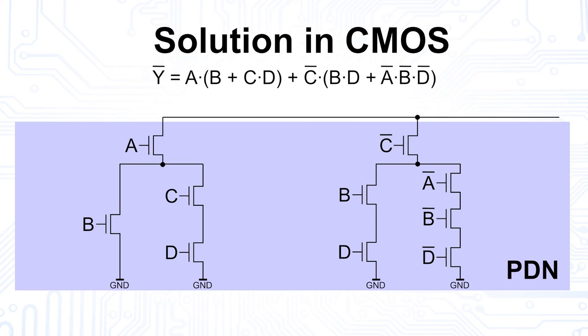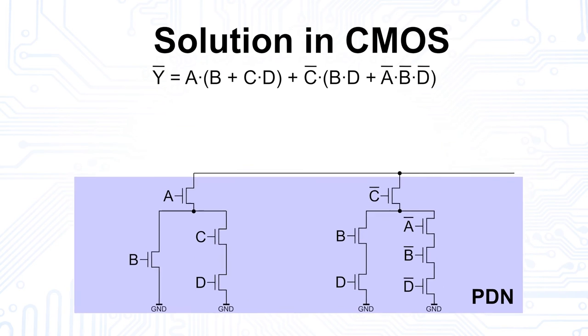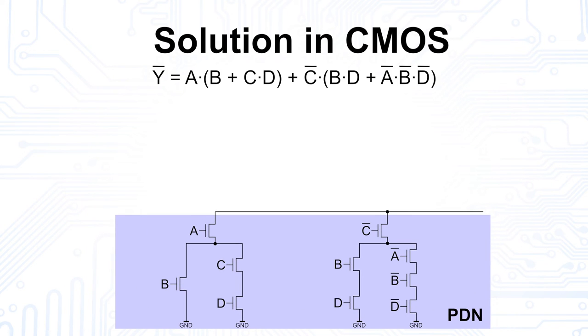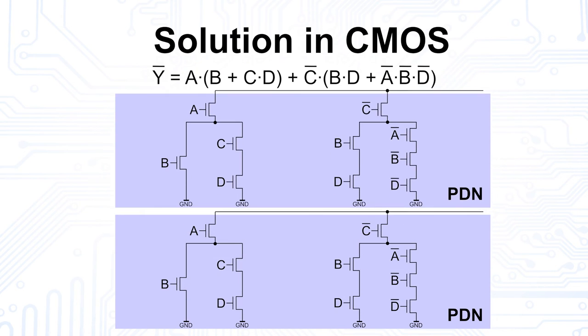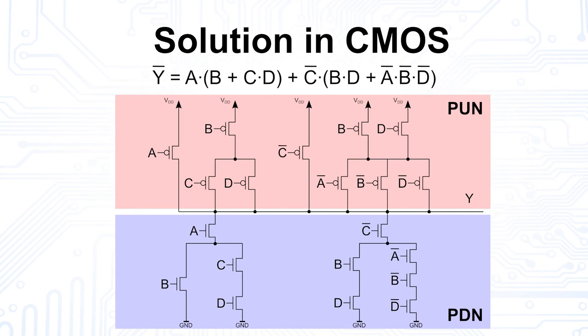With the pull-down network completed, we again use our old familiar trick to generate the second half of the circuit, the pull-up network. Again, we turn our parallel connections into series connections and vice versa. So, the pull-up network looks like this.